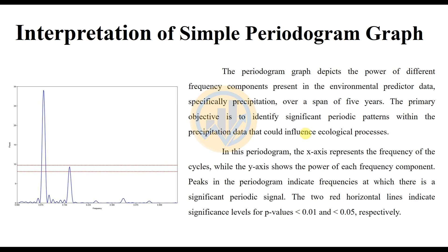The next part covers the interpretation of the simple periodogram graph. This is a simple periodogram graph. The periodogram graph depicts the power distribution of frequency components present in the environmental precipitation data — specifically, precipitation pattern over a span of 5 years. The primary objective is to identify significant periodic patterns within the precipitation pattern data, which should influence ecological processes. In this periodogram, the X-axis represents the frequencies of the cycles, while the Y-axis shows the power of each frequency component.